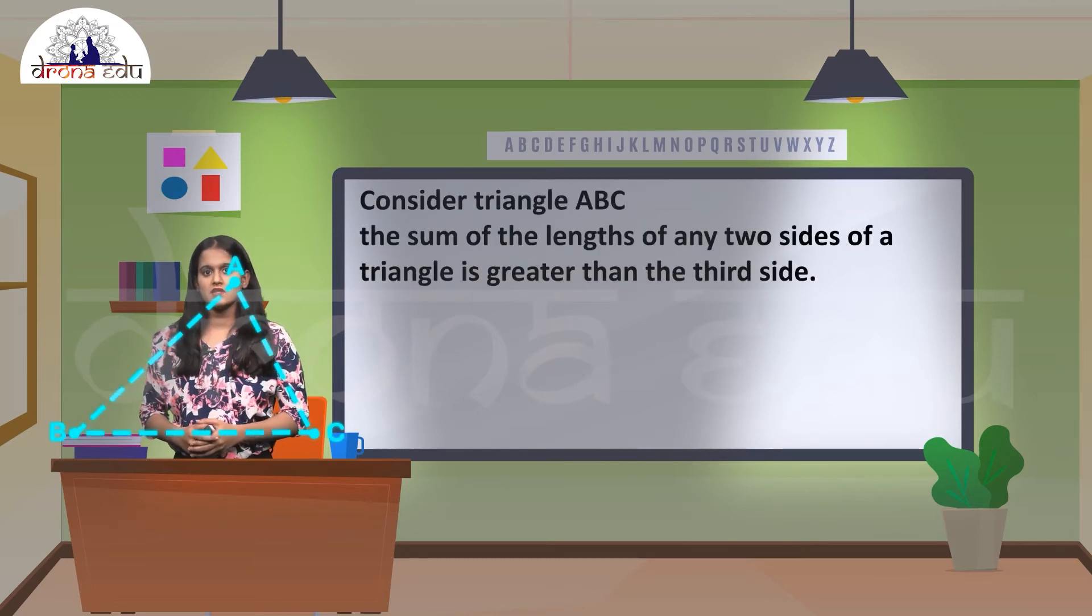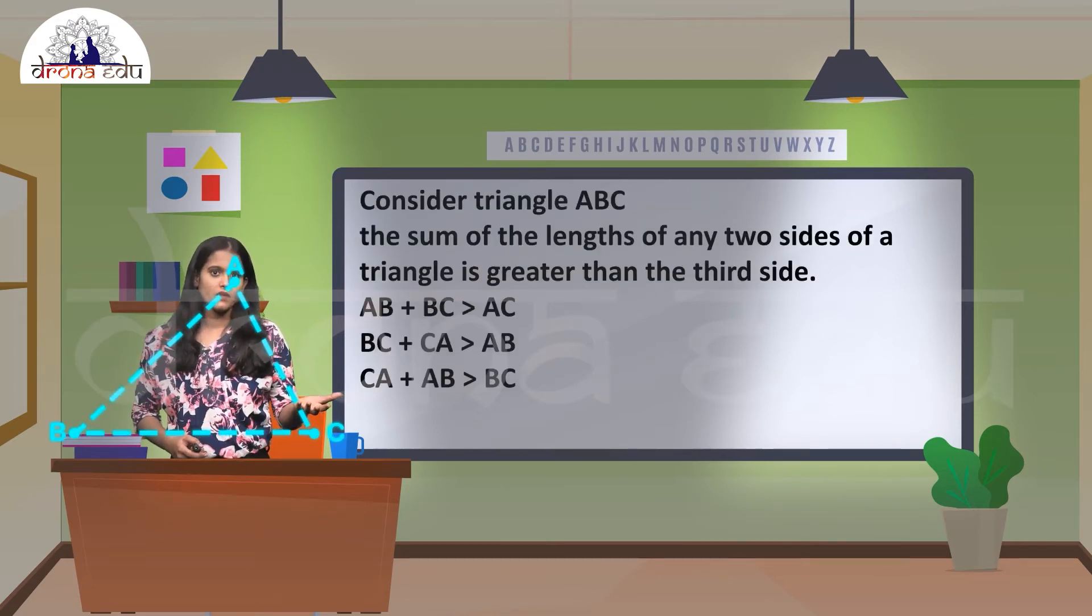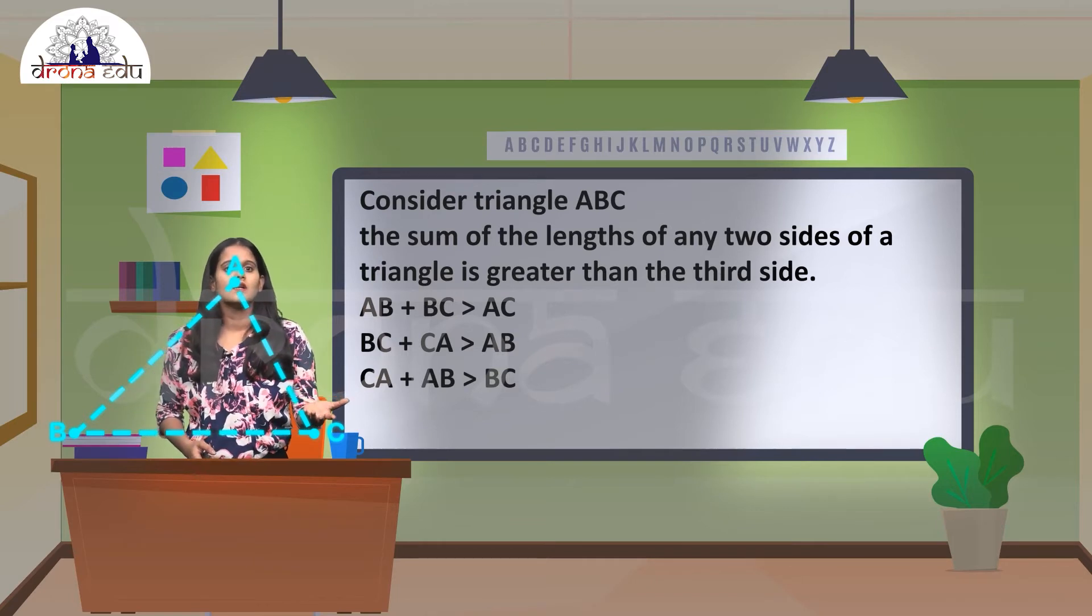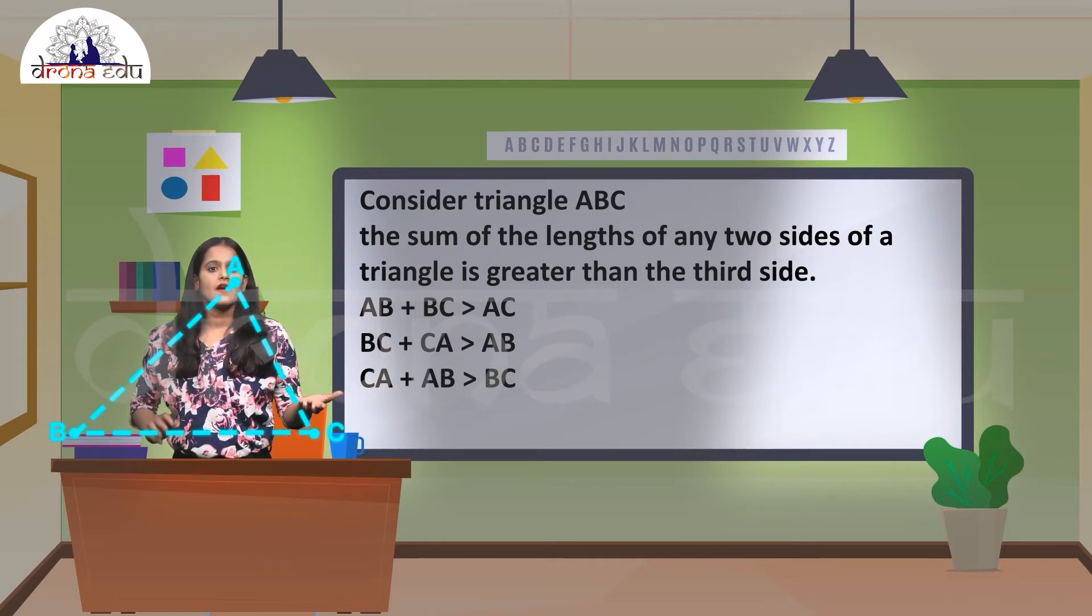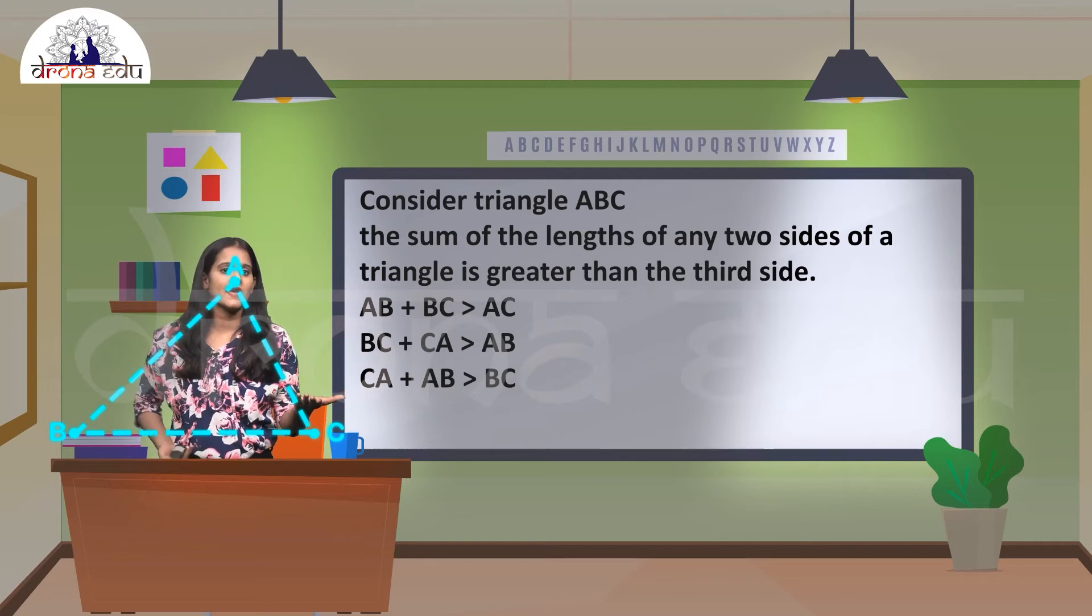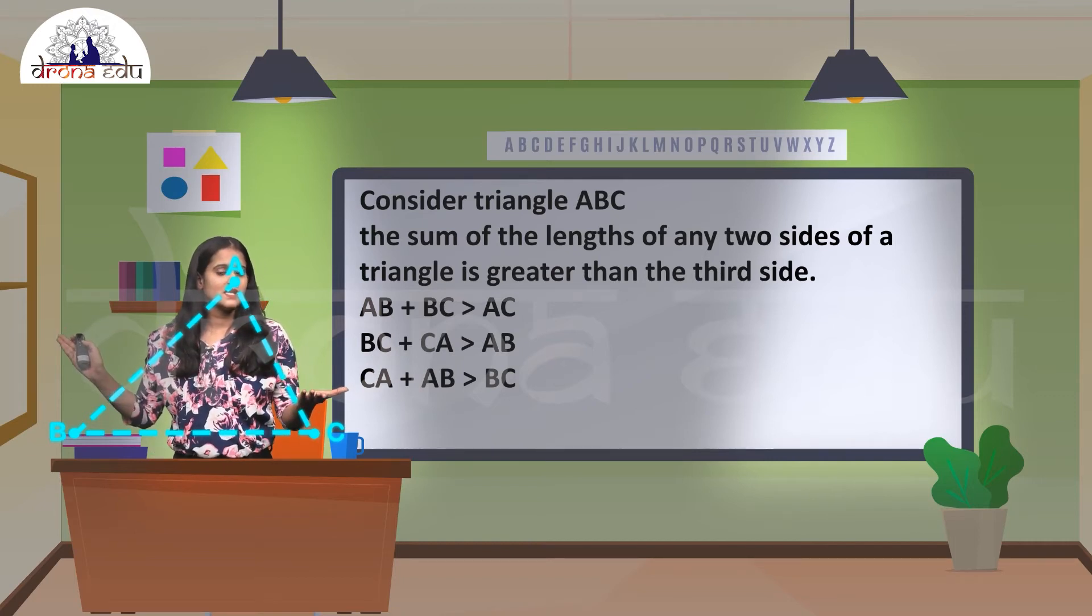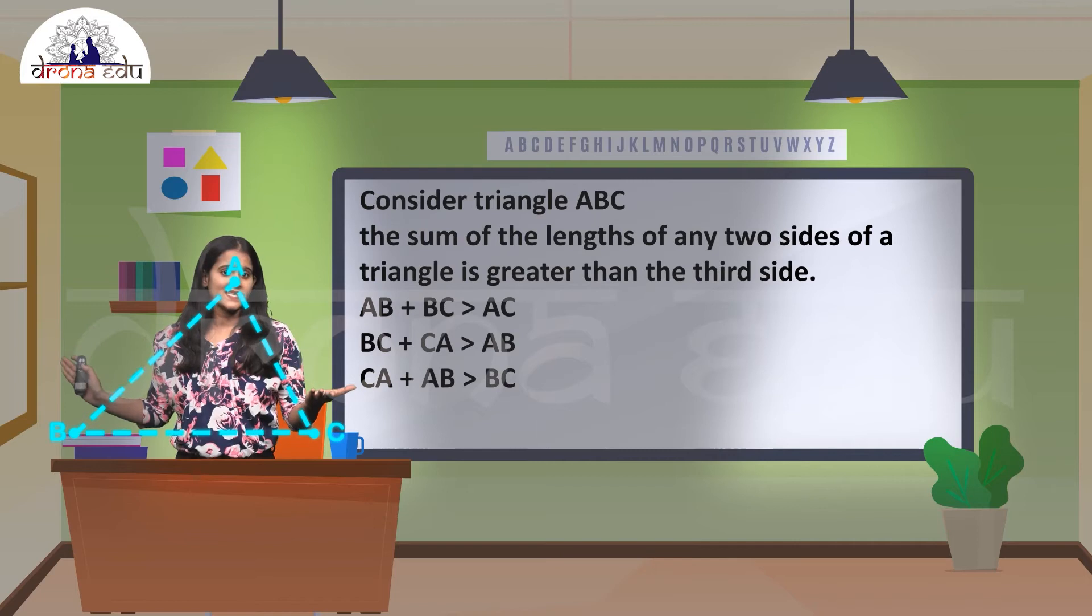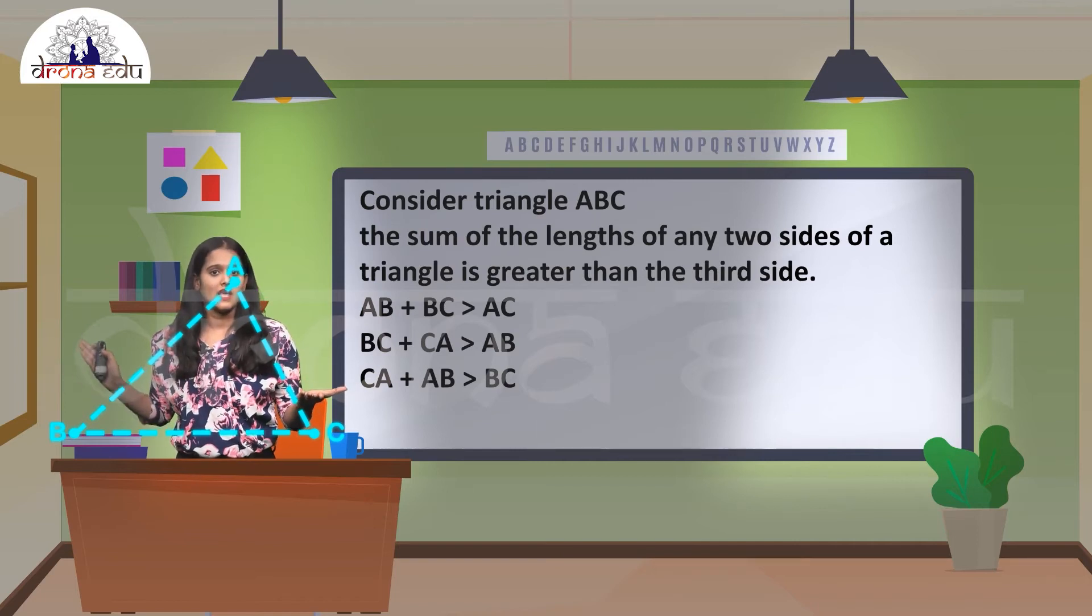Next, if I consider triangle ABC, there is a statement that the sum of the lengths of any two sides of a triangle is greater than the third side. In this triangle, you can see we have: AB + BC > AC, BC + CA > AB, and CA + AB > BC.